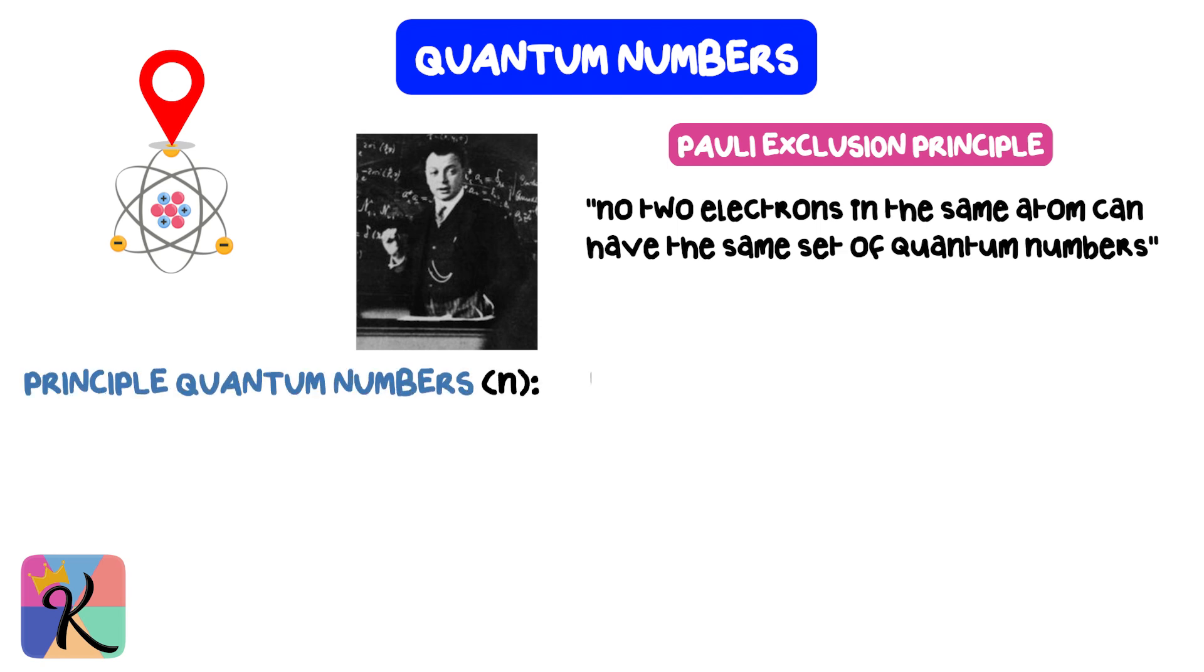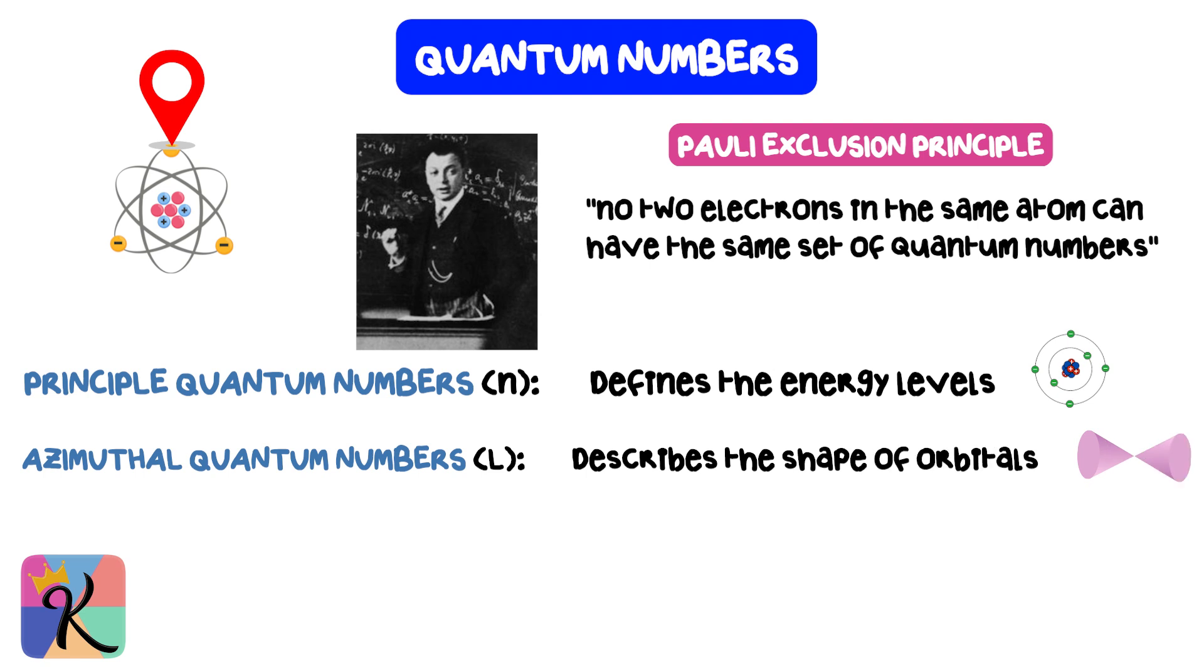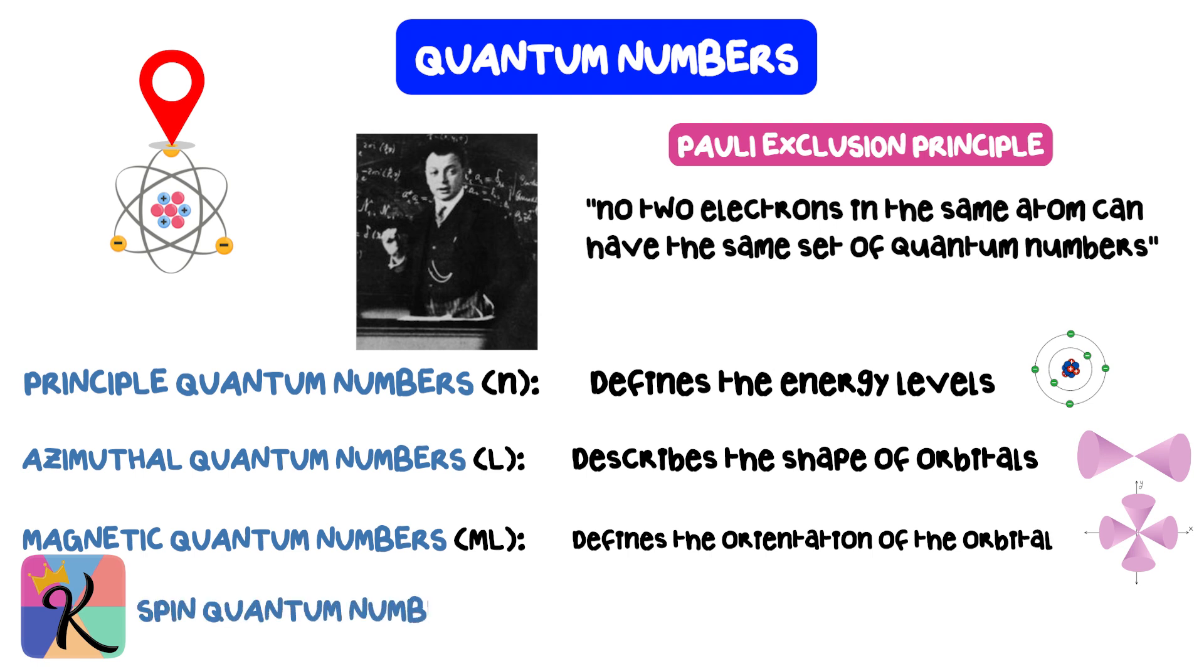Principal quantum number (n) defines the energy level. Azimuthal quantum number (l) describes the shape of the orbital. Magnetic quantum number (ml) defines the orientation of the orbital. Spin quantum number (ms) specifies the spin of the electron. These numbers are like an electron's home address, telling us where it resides within the atom and what kind of orbital it occupies.